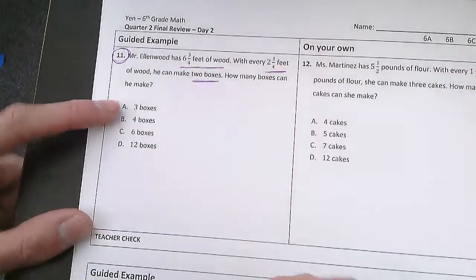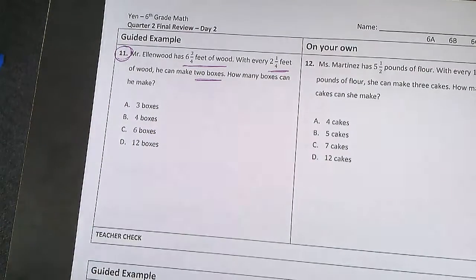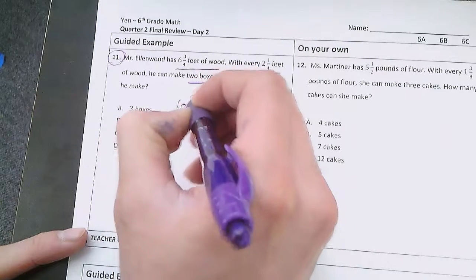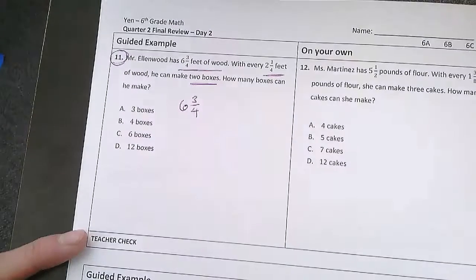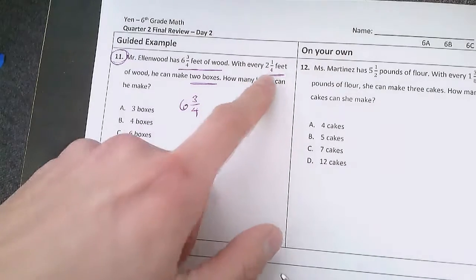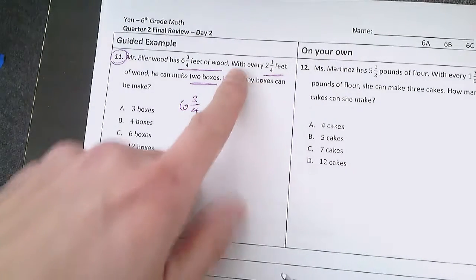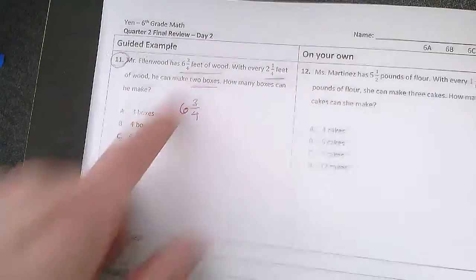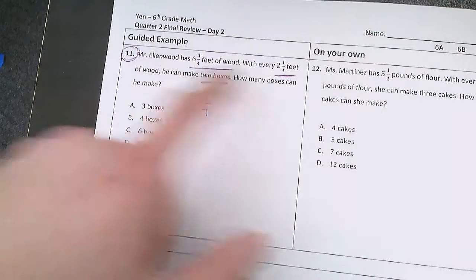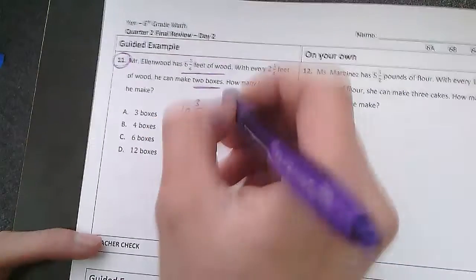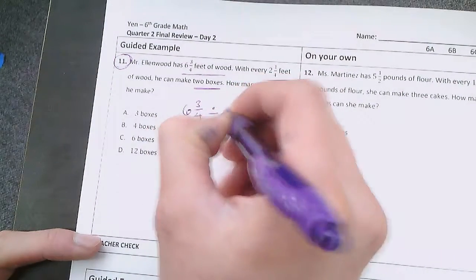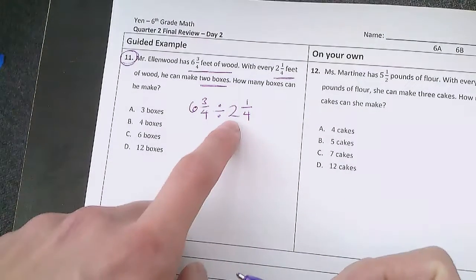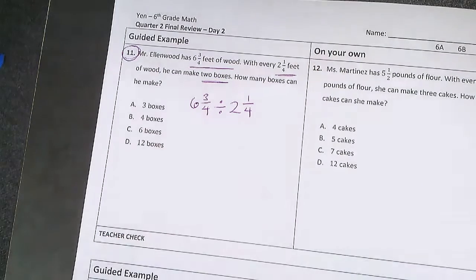I look at my answer options. I have three all the way to twelve. So we know we're starting with 6 and 3/4 feet of wood and we know that with every 2 and 1/4 feet - whenever you see the phrase 'with every' it means we're splitting this total into sections that are each this big, which means we're dividing. So we want to see how many sections of 2 and 1/4 are in 6 and 3/4.